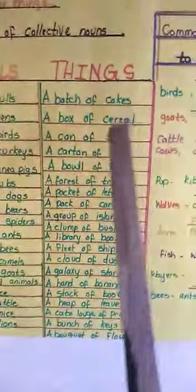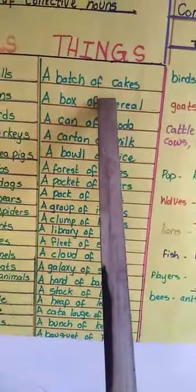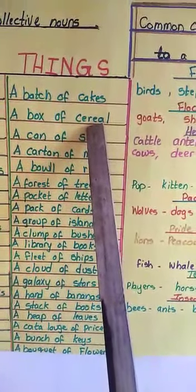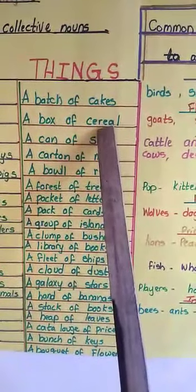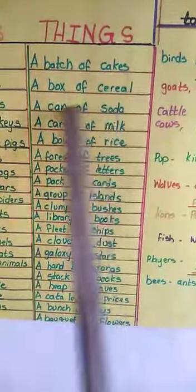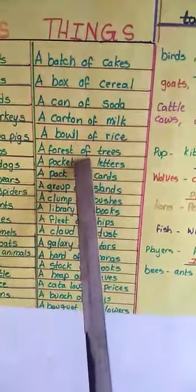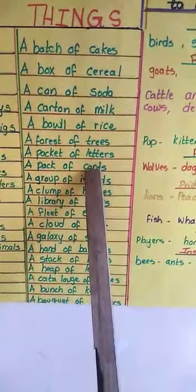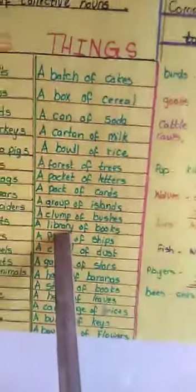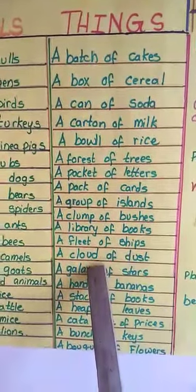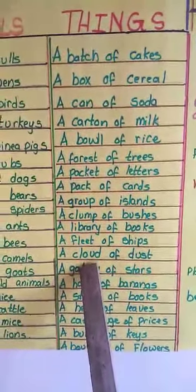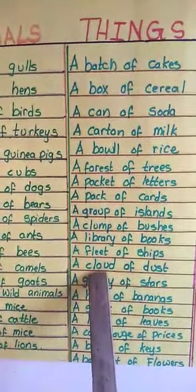Let us now move on to collective nouns for things. A batch of cakes. A box of cereal — cereal like chocos, the dry legumes we have for breakfast in the morning. A can of soda. A carton of milk. A bowl of rice. A forest of trees. A packet of letters. A pack of cards — which can also be called a deck of cards. A group of islands. A clump of bushes. A library of books. A fleet of ships. A cloud of dust — meaning the dust is heaped like a cluster of cloud, and when you blow it, it separates.